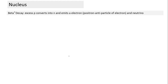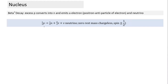Beta plus decay: a proton gets converted into a neutron. Writing the reaction, proton (charge +1) converts to neutron (charge 0), so there must be a particle with charge +1 and mass number 0 — this is a positron. Along with the positron, a neutrino (not anti-neutrino) is emitted. This reaction is favored when there is an excess proton.